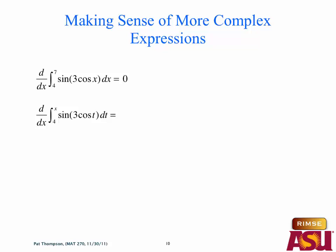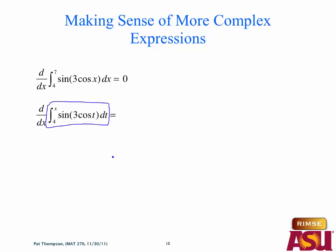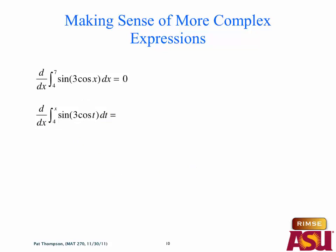So we want to make sense of these expressions based on what things mean. The integral from 4 to 7 of some rate function means we're accumulating with a reset at 4 up until 7 — it gives us a value, and the derivative of a constant is zero. More interesting is when the upper limit is x. Now what's in the blue box? It's not a number — it's an accumulation function.